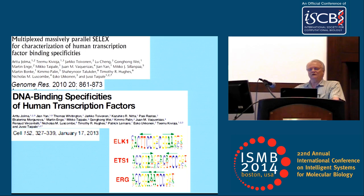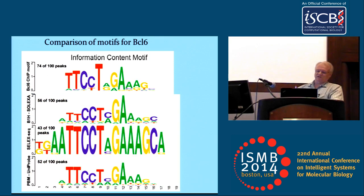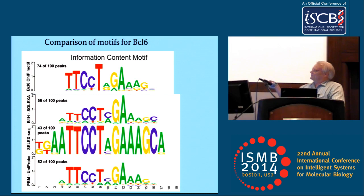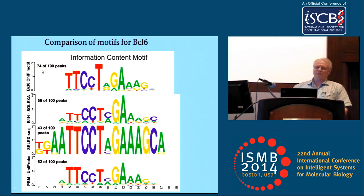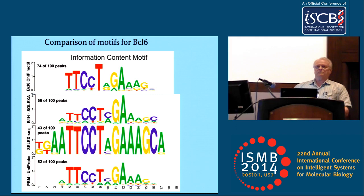We actually knew this from a different project — a paper we published earlier this year on zinc finger proteins. For a particular factor, BCL6, there are four different motifs: one based on ChIP-seq, one on bacterial one-hybrid, one on protein-binding microarrays, and their published one. They agree on the consensus pattern, but the published one looks over-specified. When you go back to ChIP-seq data and ask how many peaks are identified, the ChIP-seq motif gets about 74 peaks, B1H and PBM get about 50, and the select-seq published motif only gets about 40 — indicating over-specification.